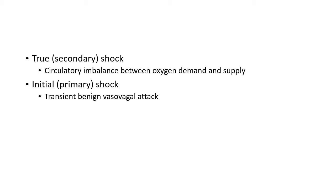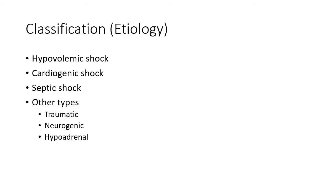There is also anaphylactic shock, which is immunologic in origin — we will discuss that another time with immunology. Our topic today pertains only to true or secondary shock, which is a true imbalance between oxygen demand and supply. Coming to classification and etiology: shock is classified into three major types — hypovolemic shock, cardiogenic shock, and septic shock — and a few minor types like traumatic shock, neurogenic shock, and hypoadrenal shock.